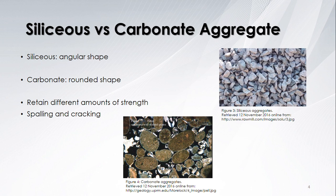Siliceous aggregates have a more angular shape, and carbonate aggregates have a more rounded shape. The picture on the top is of siliceous aggregates, and the picture on the bottom is of carbonate aggregates. A better bond is created between siliceous aggregates, and therefore it has a greater initial strength. When exposed to higher temperature fires, carbonate aggregates retain more strength. This is because siliceous aggregates are more prone to spalling, and carbonate aggregates are more likely to crack on the surface.